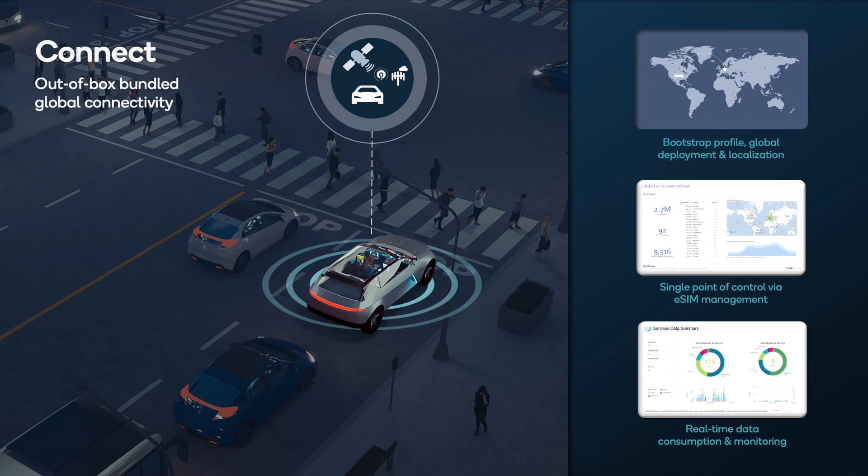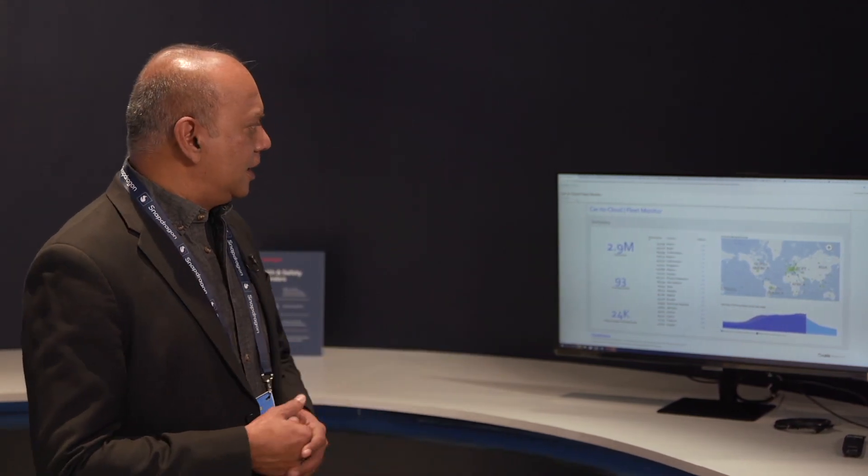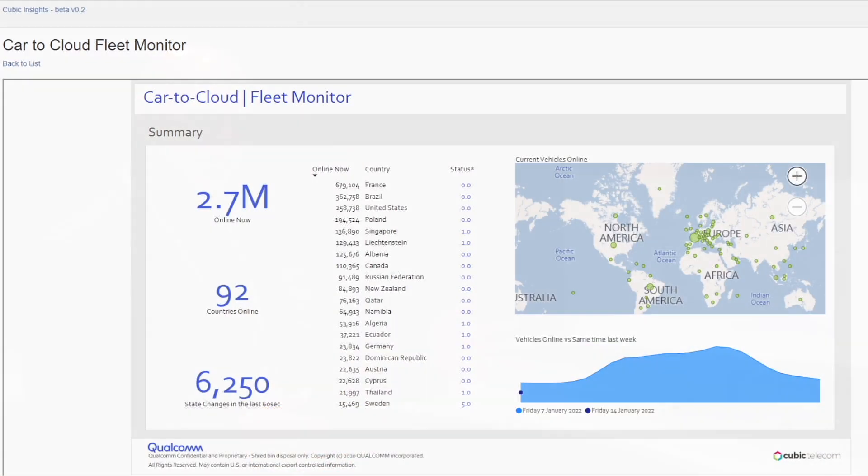They have over 100 plus MNOs deployed and commercially available on millions of cars. We're going to start with some of the dashboards which show Cubic Telecom's technology integrated with car-to-cloud. We're going to start with the street monitor screen.